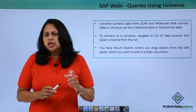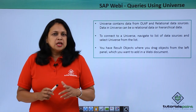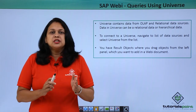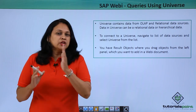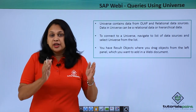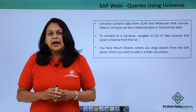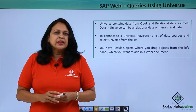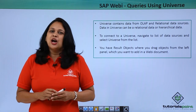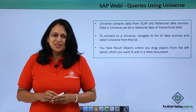A universe can be created in the UDT or IDT tool of Business Objects. This opens the query panel, which shows you a list of all available objects on the left side. Result objects is where you drag objects from the left panel which you want to add in a Webi document. Let us move to the SAP BO system and see how to build queries using universe as a data source.